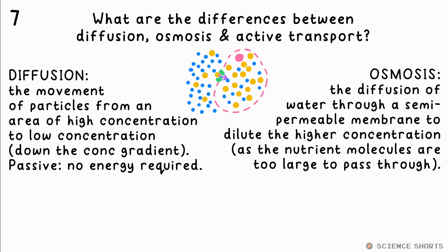Osmosis is the diffusion of water through a semi-permeable membrane to balance the concentration of solutions on either side, for example sugar concentration in a cell. The water moves because the sugar is too large to fit through the holes in the membrane. The water always moves into the higher concentration solution in order to dilute it. This is how water enters root hair cells in a plant.